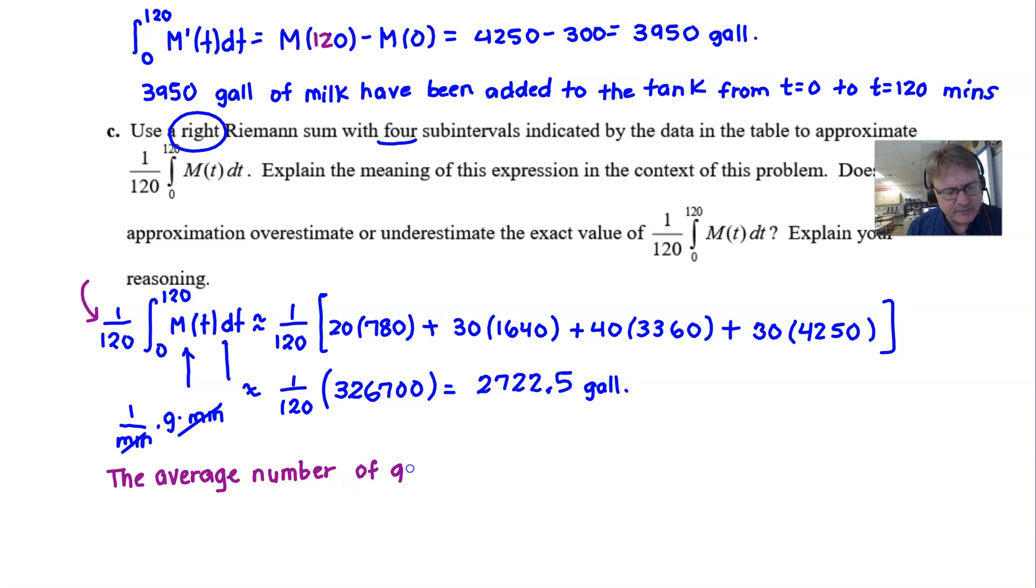If you said the average value of the number of gallons, that's okay, but we normally wouldn't talk like that. I think this is probably a little clearer; they would both earn credit. So the average number of gallons in the tank, but we have to have a time interval and that time interval is going to be from t equals zero minutes to t equals 120 minutes. And it's probably given that this is gallons of milk, but I could write that in there to be a little clear and I probably should have. So the average number of gallons of milk in the tank from time zero to time 120 is 2722.5 gallons.